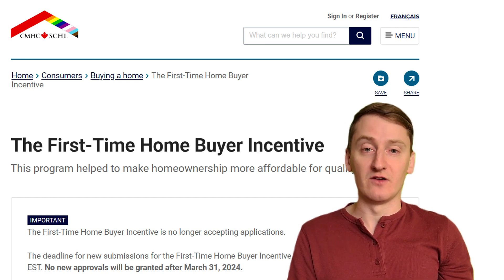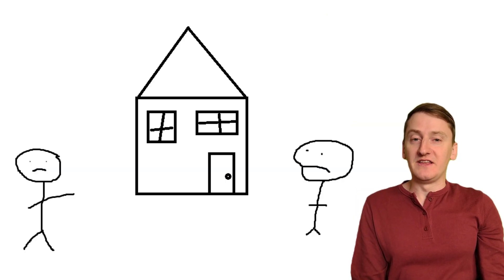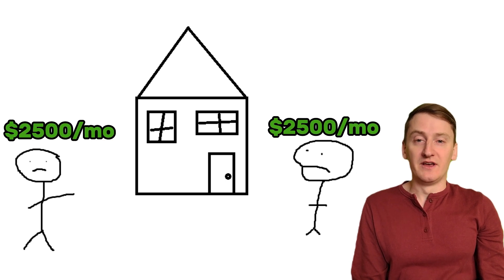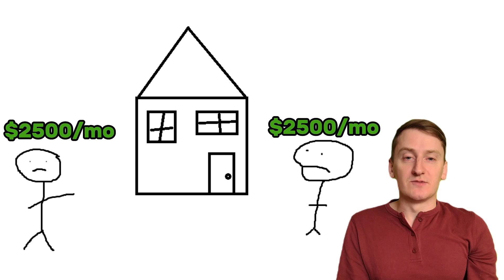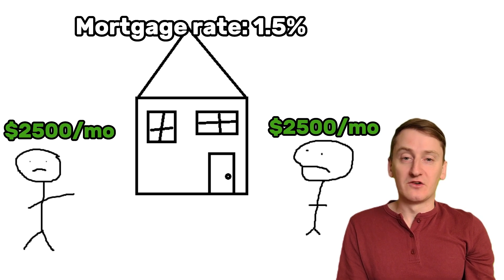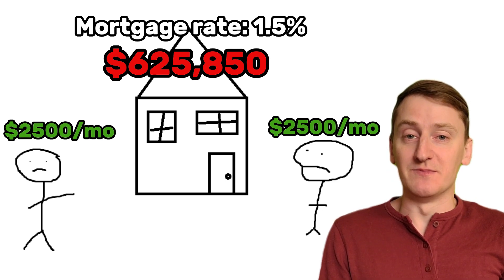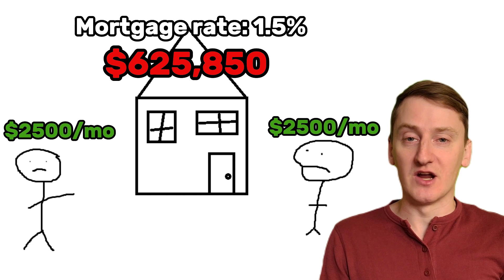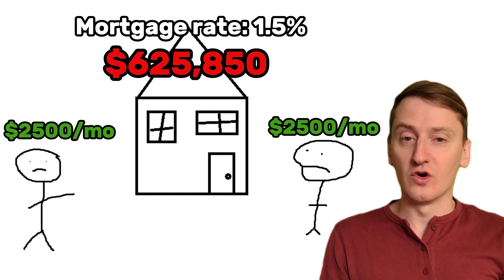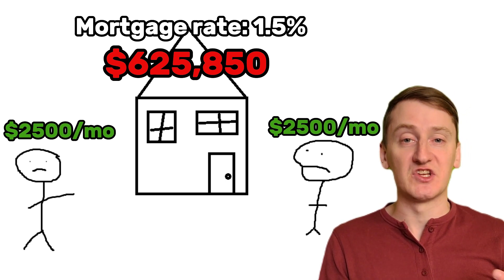That means that when interest rates go down, home prices tend to go up. Let's say you have two people competing to buy a house in a hot market, and they each have $2,500 a month that they can pay for a mortgage. At an interest rate of 6%, they'd be able to borrow about $394,000 to pay for the house, plus whatever they have saved for the down payment. Now imagine the interest rate drops to 1.5% — now they can each borrow over $625,000 with the same monthly payment. Keep in mind, these people have been told their entire lives that housing is the best investment you can make, and if you don't have a house you're just throwing your money away. So are they going to agree to a lower price with a lower mortgage payment, or are they going to use that extra borrowing power to bid the price of the house higher and higher until they're once again maxing out their mortgage size?